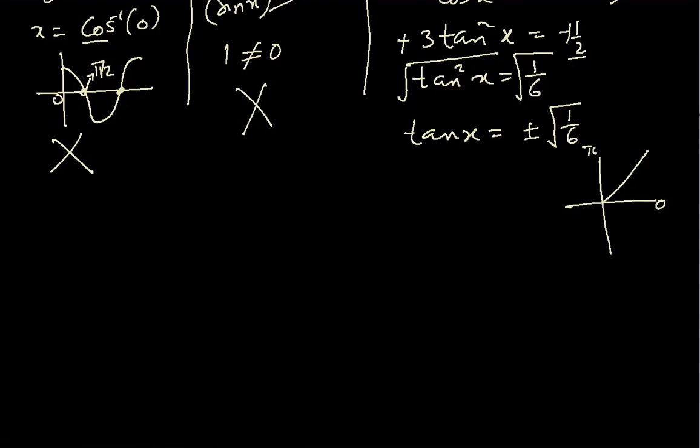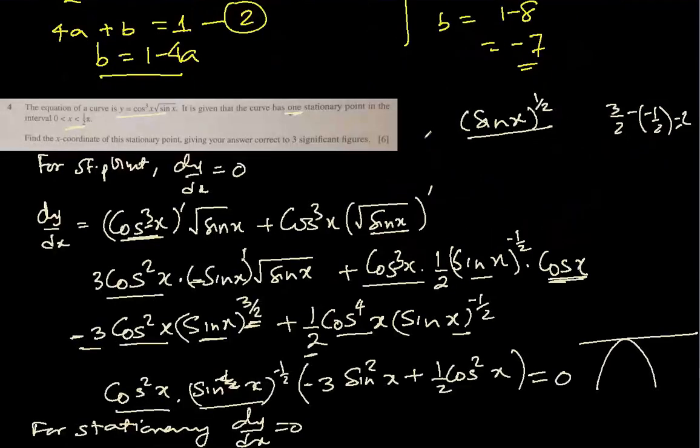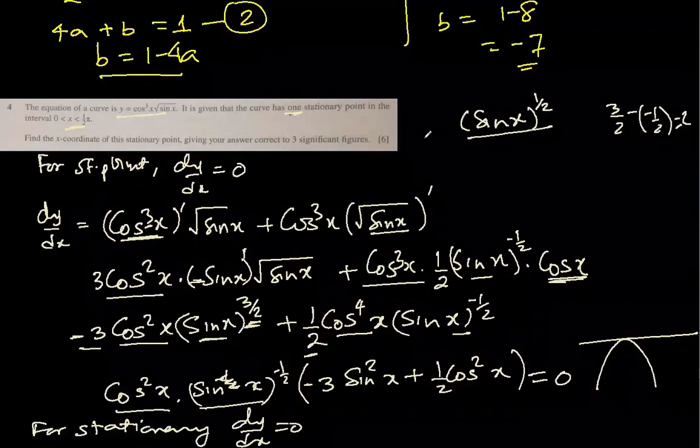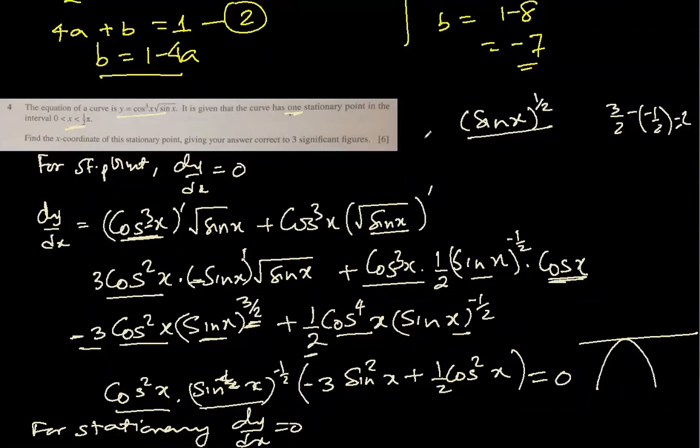And in radians it gives us 0.387596, which can be rounded off to 0.388. Did they ask anything else or only the x coordinate? To find the x coordinate of the stationary point giving 3 significant figures. That is the value of x.